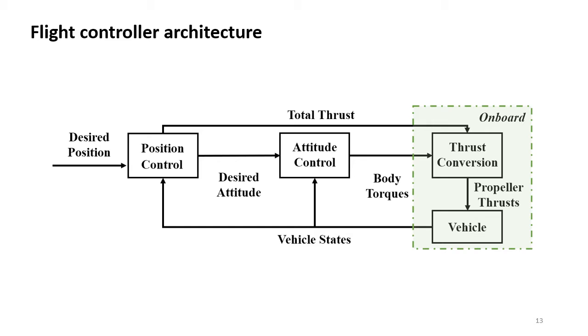Next, I would like to briefly introduce the control architecture of the system. It features a cascaded control structure. A position controller outputs desired total thrust and thrust direction, whereas an attitude controller computes desired torques. Finally, a thrust converter maps the total thrust and body torque into per propeller thrust commands.